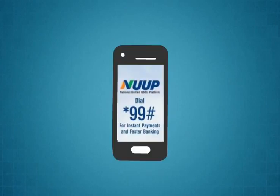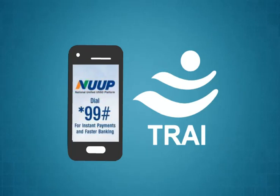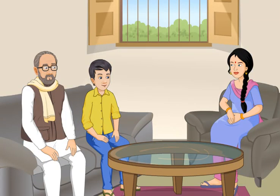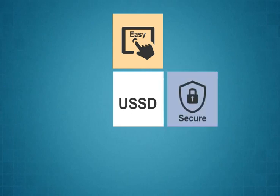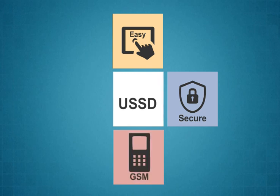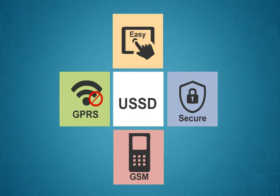Remember, the NUUP services are chargeable. Though TRAI has set a maximum limit of Rs. 1.50 per transaction, one can contact their respective telecom service operator to confirm the exact charges. USSD is simple and easy to use. It is more secure than SMS. It works on almost all GSM handsets and does not require any GPRS connection.